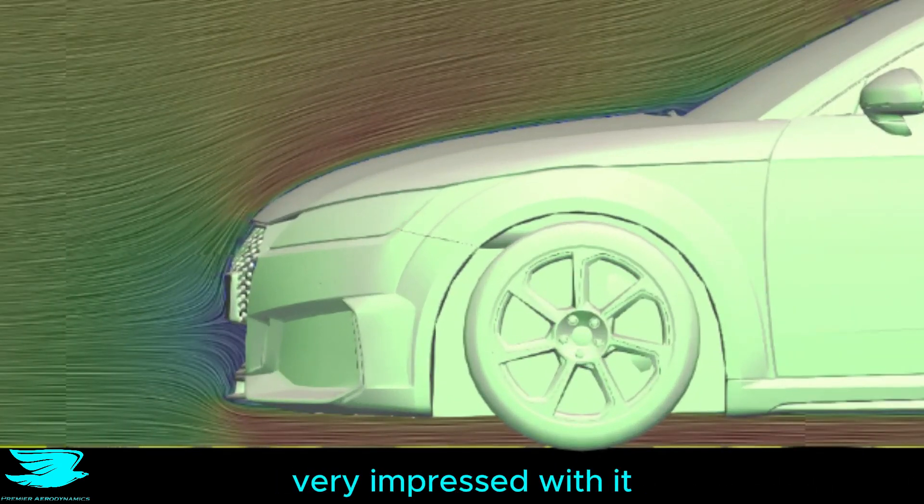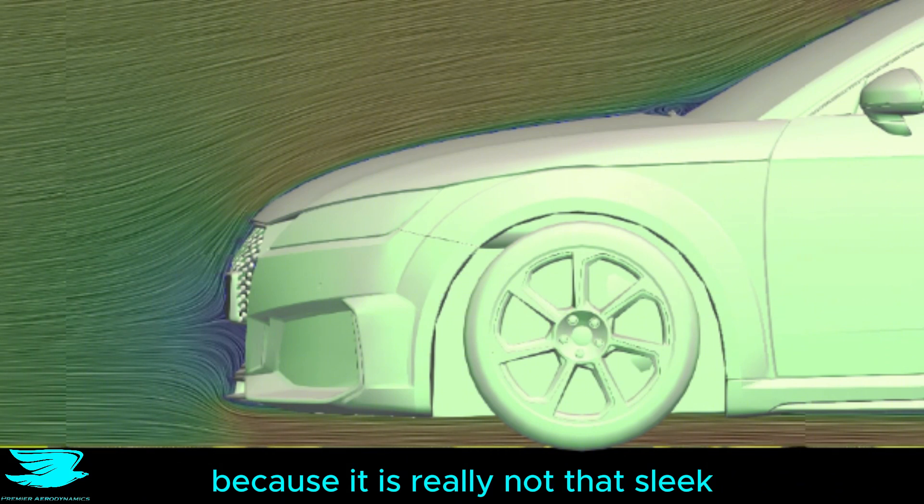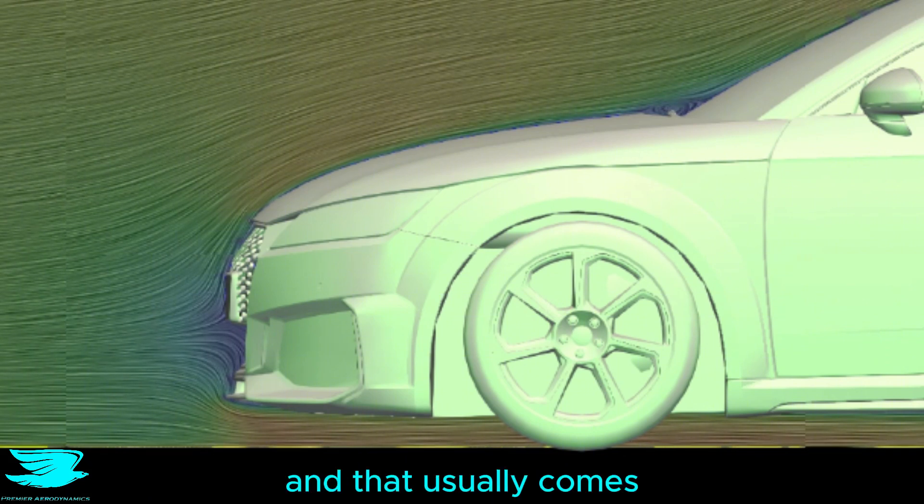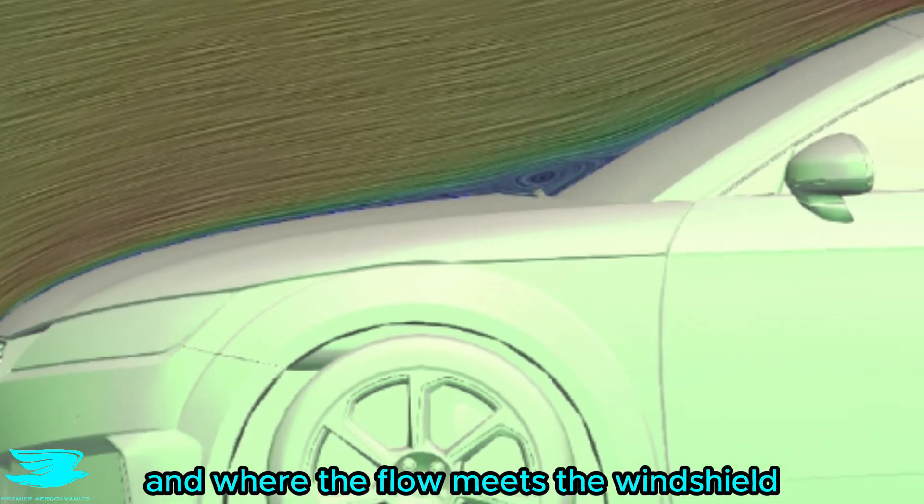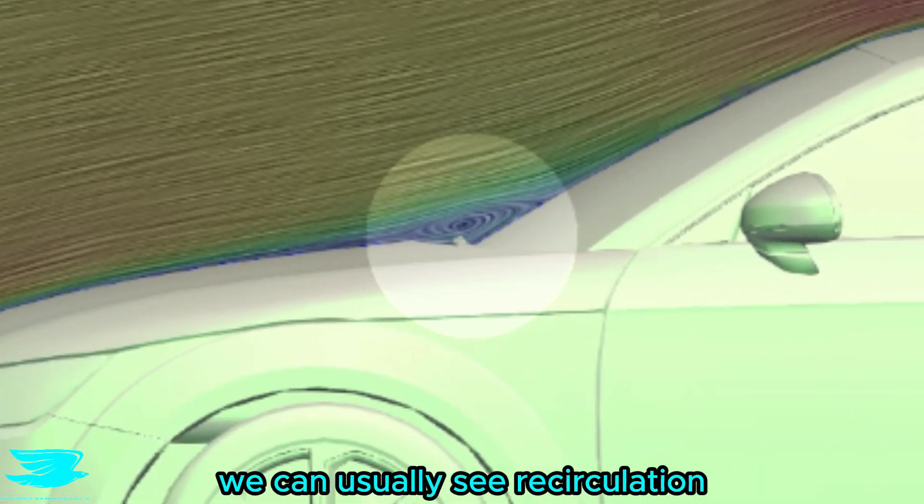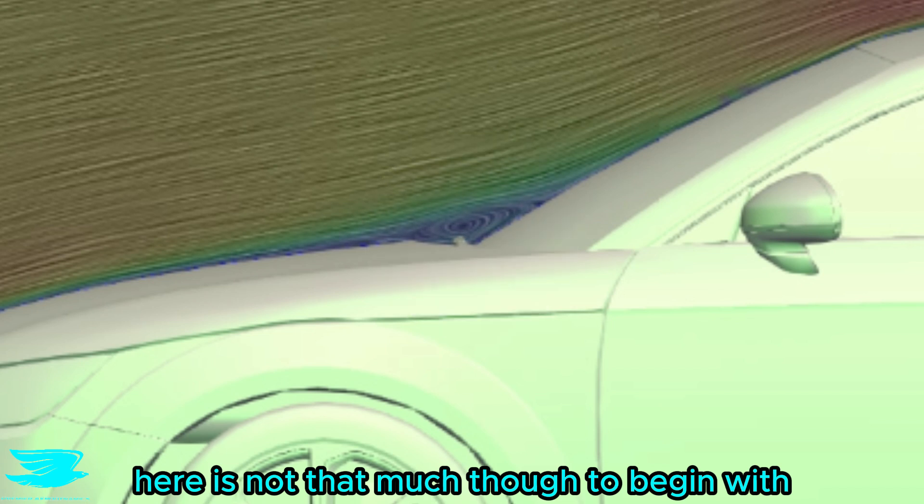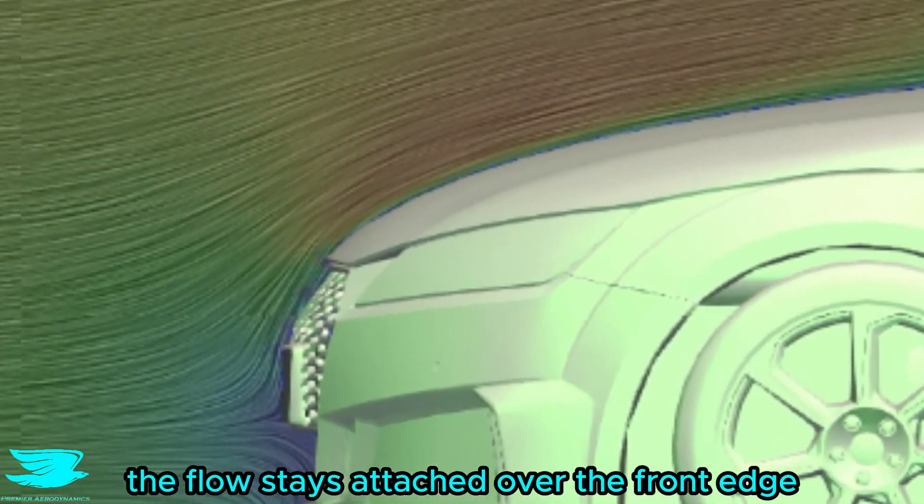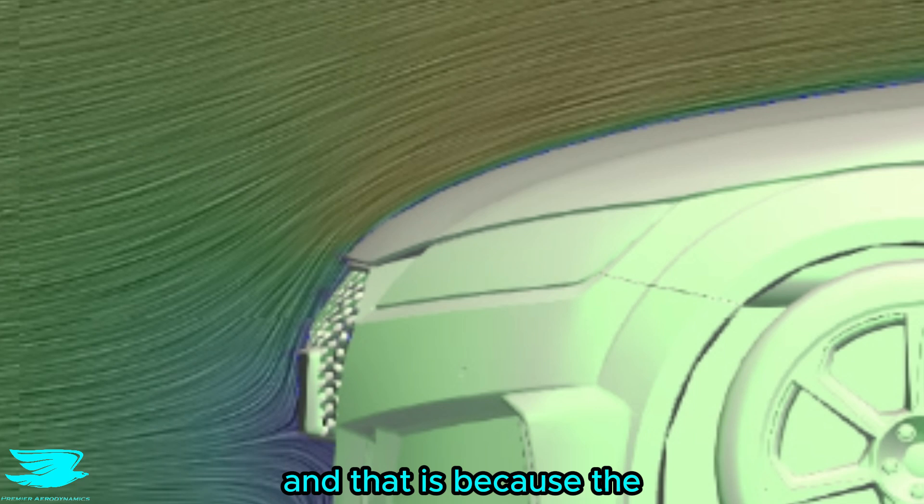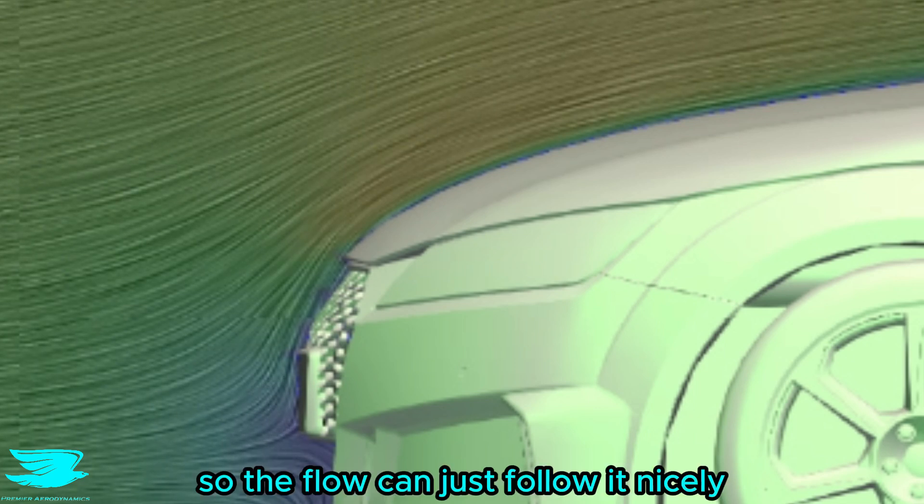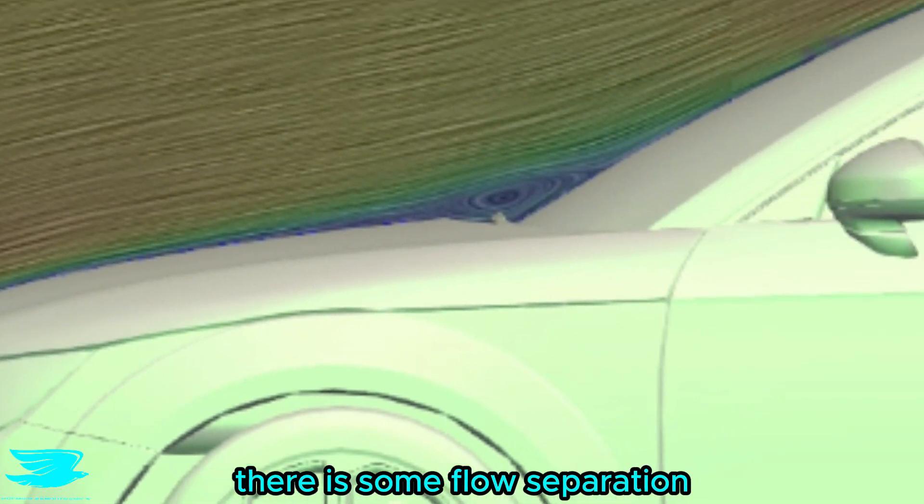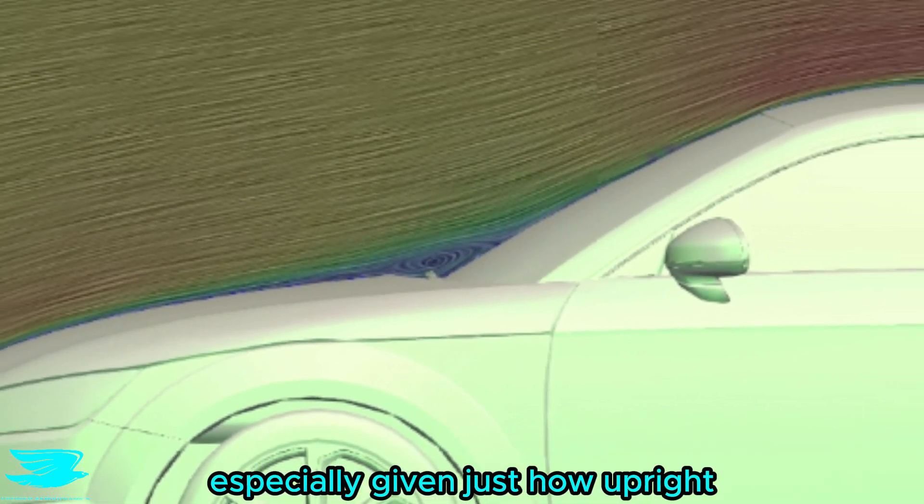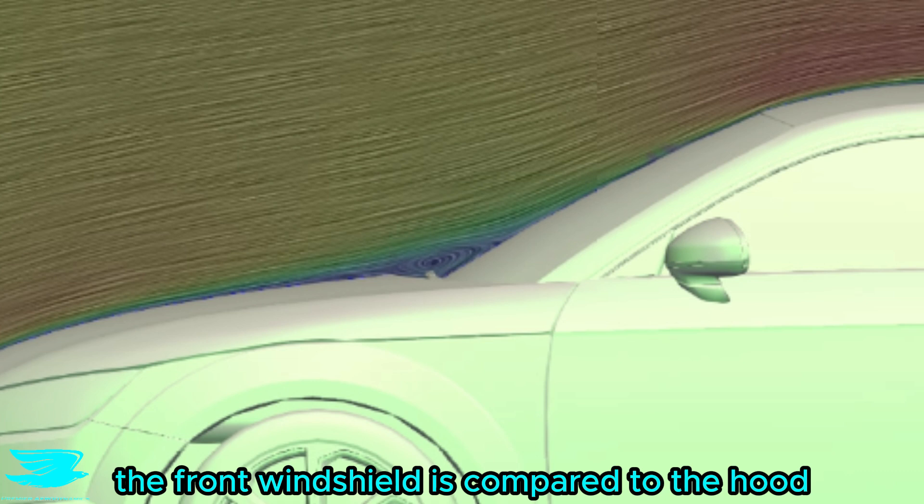Moving to the hood, I am very impressed with it, because it is really not that sleek. It is very flat, and that usually comes with a bunch of problems, including flow separation, and where the flow meets the windshield, we can usually see recirculation. Here, it's not that much though. To begin with, the flow stays attached over the front edge, and that is because the edge is very rounded. So the flow can just follow nicely. Then, when it meets the windshield, there is some flow separation, but not very much, especially given just how upright the front windshield is, compared to the hood.